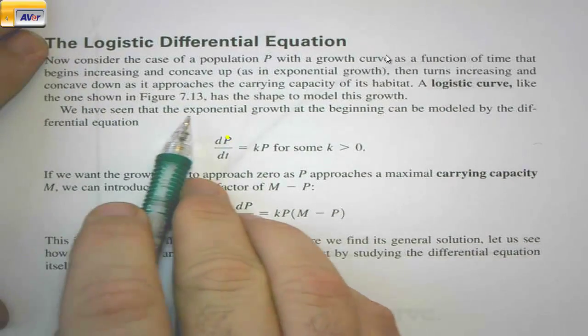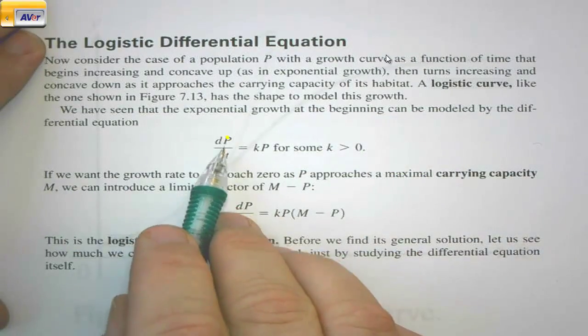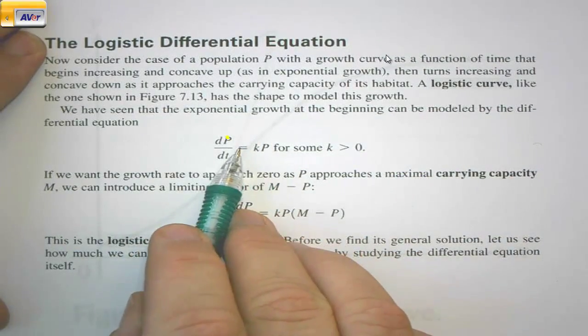We have seen that the exponential growth at the beginning can be modeled by the differential equation dP/dt = kP for some k > 0. That's the exponential growth model.